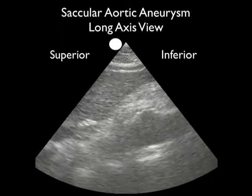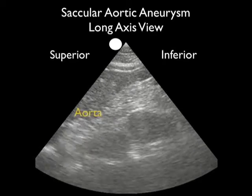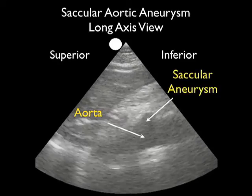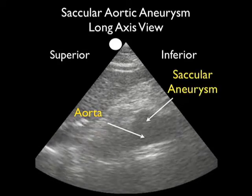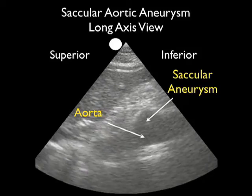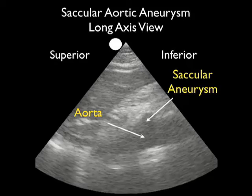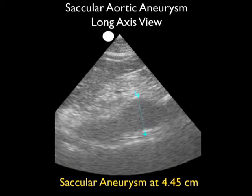This is a rare video clip showing a saccular abdominal aortic aneurysm in a patient who presented to the ED with epigastric abdominal pain. The probe is positioned in a long axis configuration with the aorta running from left to right, and we see an outpouching of the aorta coming anteriorly — that's the saccular aneurysm. Measuring it, we come up with 4.45 centimeters. As the patient was symptomatic with epigastric pain over this aneurysm, she went directly to the operating room for operative repair.